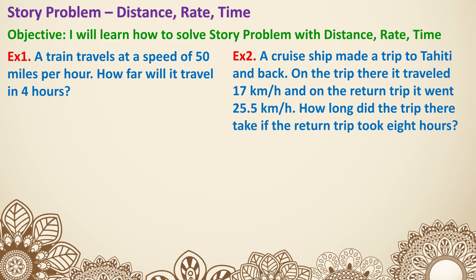Let's look at more complicated examples. Example one: a train travels at a speed of 50 miles per hour. How far will the train travel in four hours? The rate is 50 and it's traveling for four hours, so the distance is clearly 200 miles.